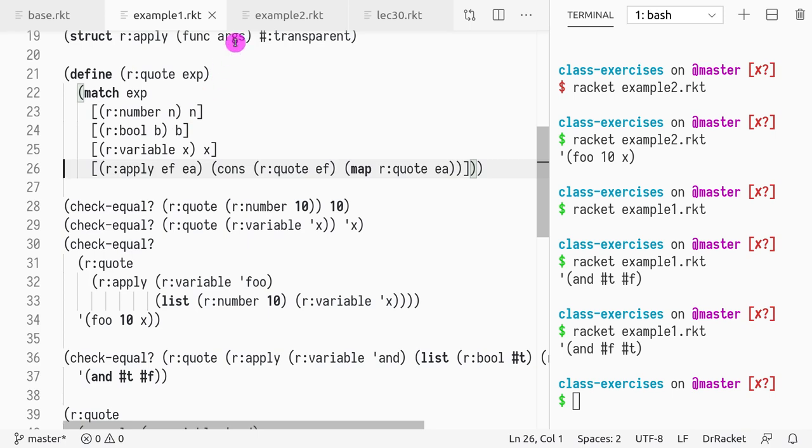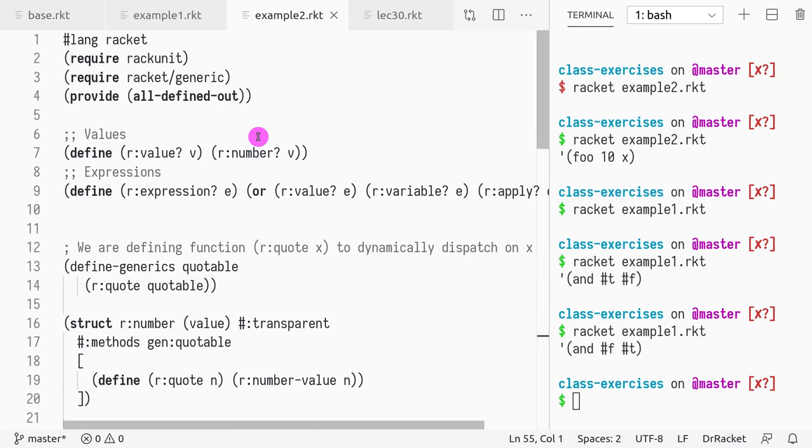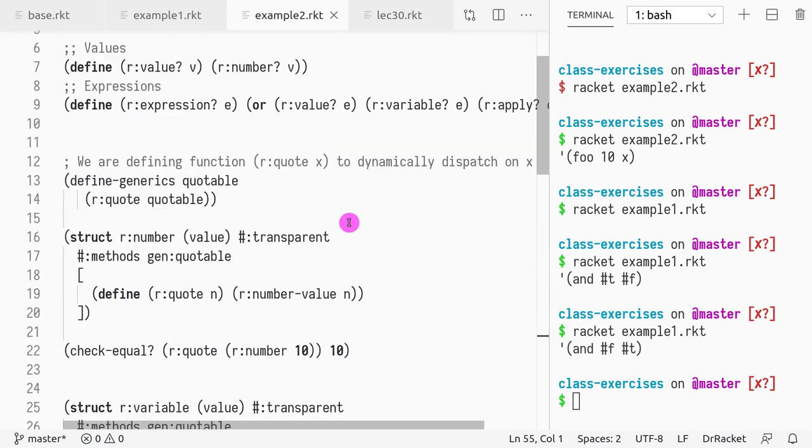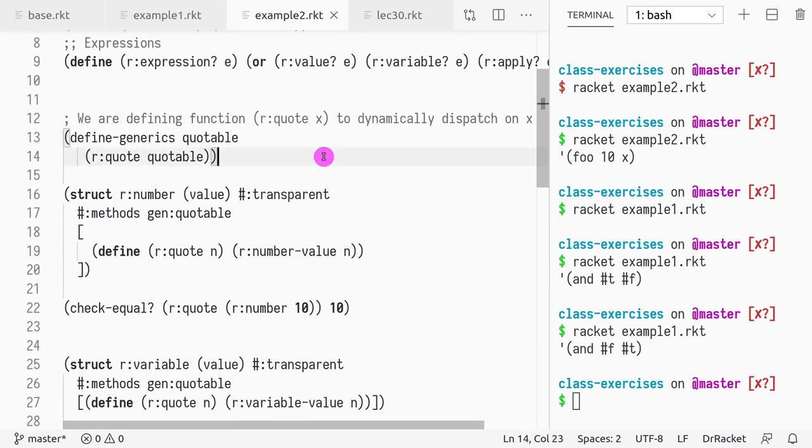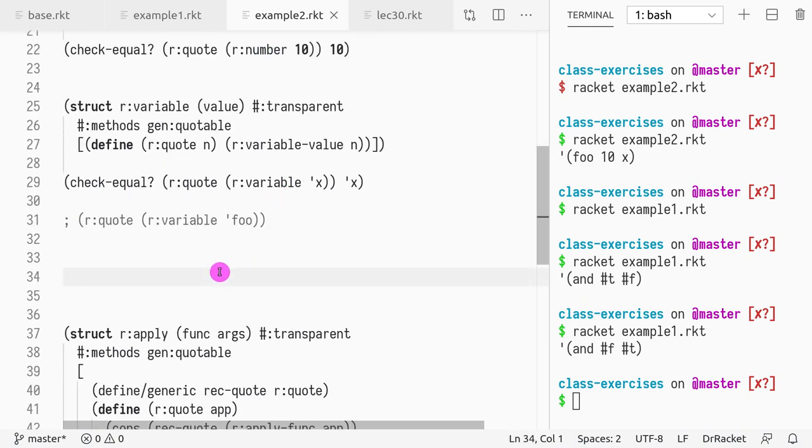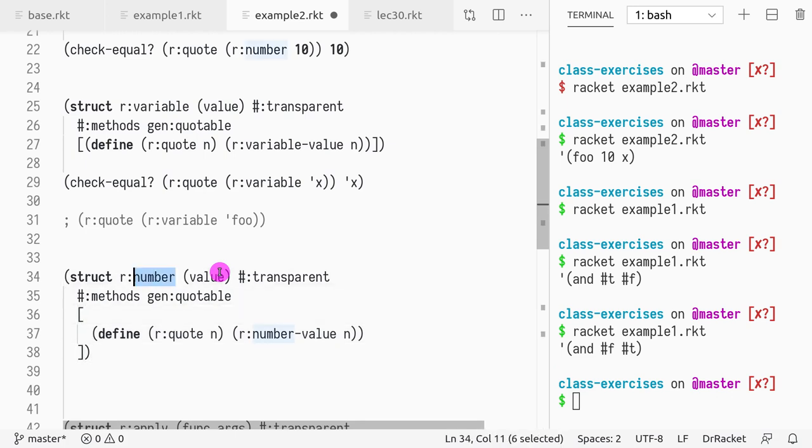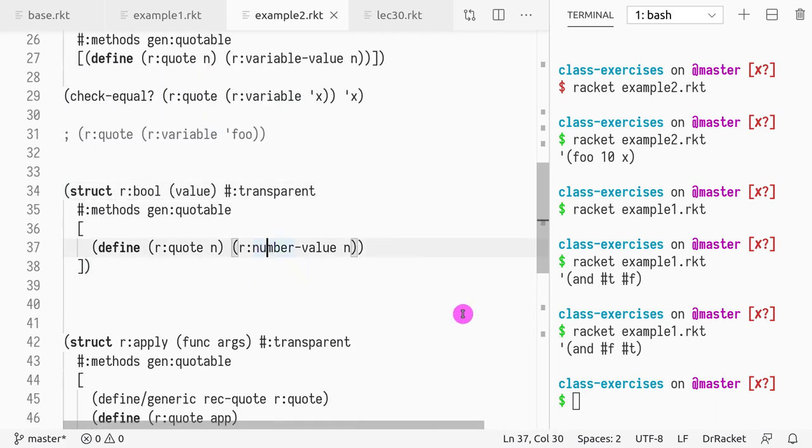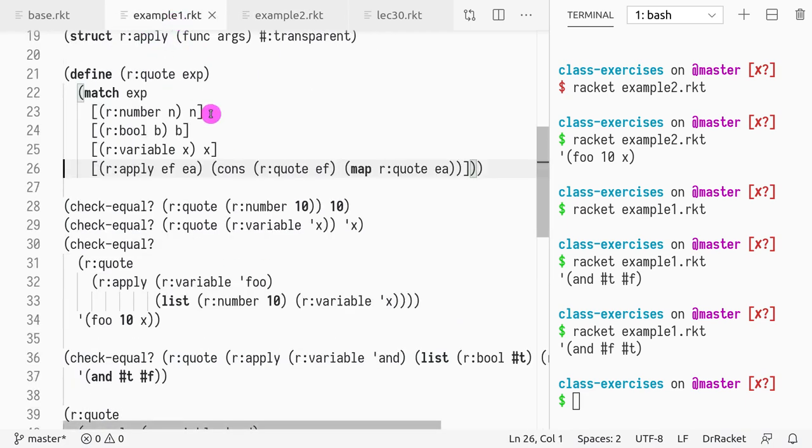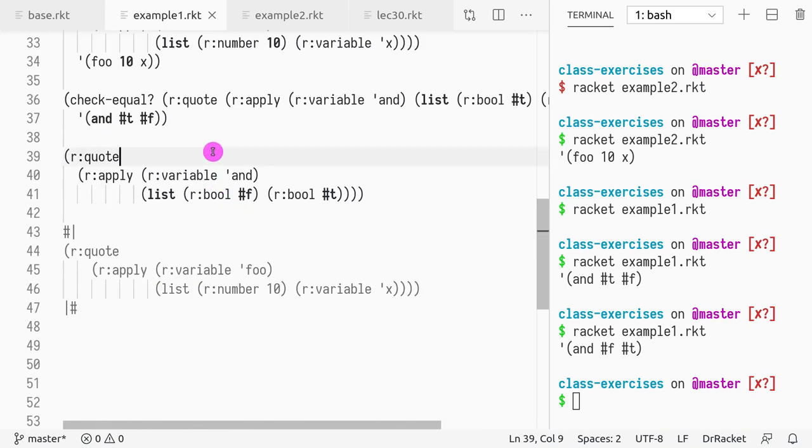What do we need to do for example two? For example two, I want to add booleans. To do that, I need to define a new struct that is now a boolean. I'm going to do that here. Call it boolean, boolean value. And I want to copy the example I had before.